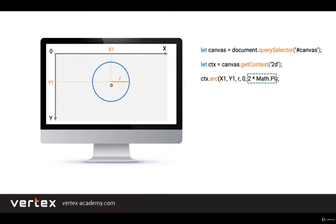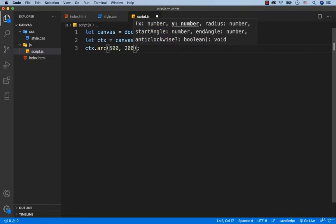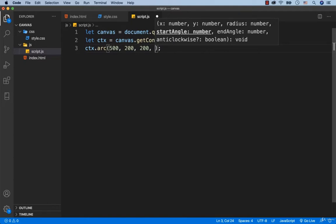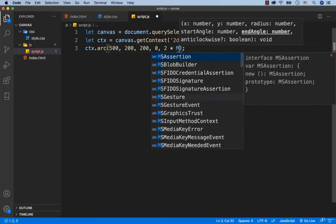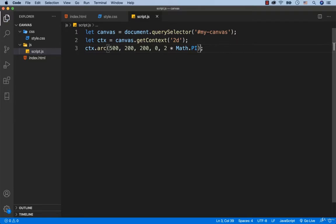Ok, let's check how it works in practice. We type in ctx.arc. Then let's specify five arguments. We set 500 pixels for x, 200 pixels for y and 200 pixels for the radius. After that we use 0 for start angle and then to get the value of 2 pi, we add 2 multiplied by Math.PI.